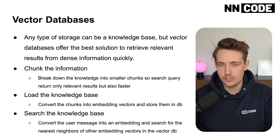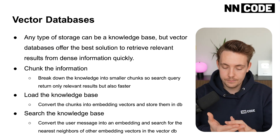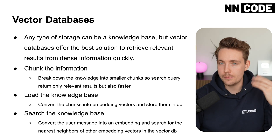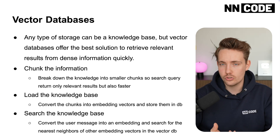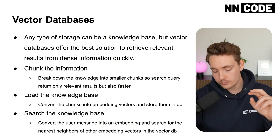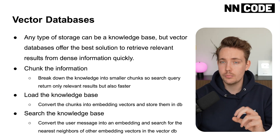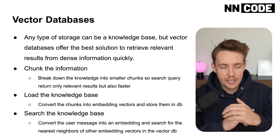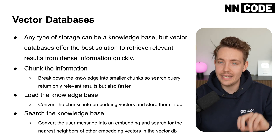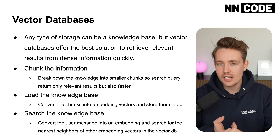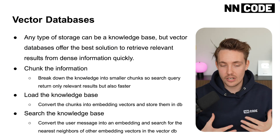Because we convert to vectors, it's much faster to match. When we do this we need to chunk up our information. Say we have a PDF file with 20 pages — we could chunk it by page or by section. That's data chunking: breaking down the knowledge into smaller chunks so search queries return only relevant results faster. We can also have re-ranking on top of that. At the end of the day, we just want to chunk up our information so we can retrieve it fast.